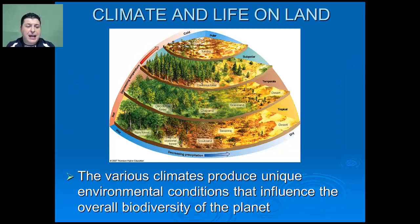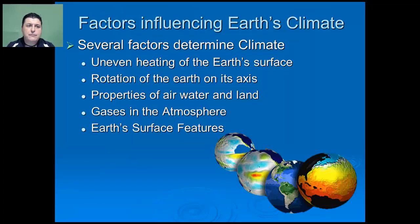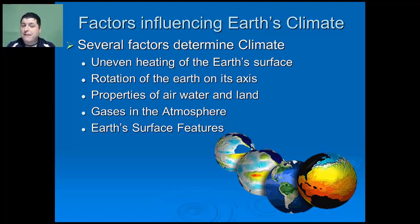It is these various climates that will produce unique environmental conditions that will influence the overall biodiversity of the planet. There are many factors that influence Earth's climate. Some of them include the uneven heating of the Earth's surface, the rotation of the Earth on its axis, the various properties of air, water and land, the gases present in the atmosphere, and Earth's overall surface features.